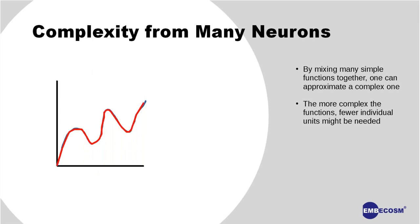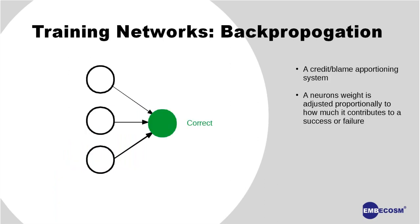It's worth noting that if we are willing for our individual units — our neurons — to be more complicated themselves, we'll probably need fewer of them to do any given task. Here I've tried to use simple curves instead of straight lines to approximate the function, and it was much easier — I needed far fewer units.